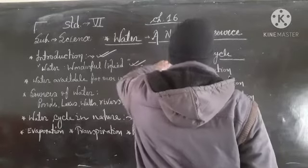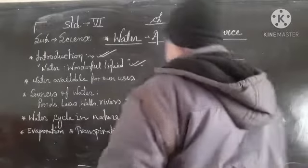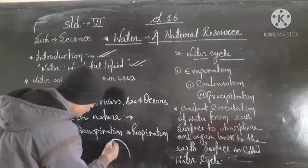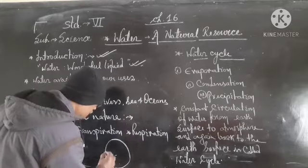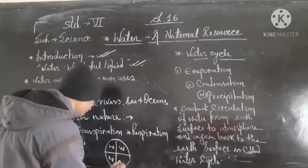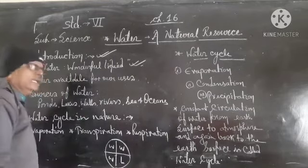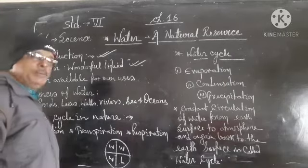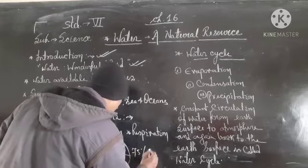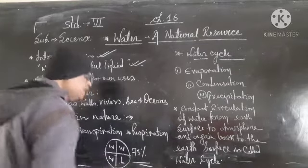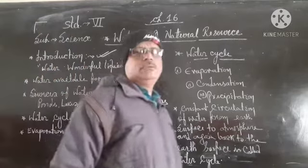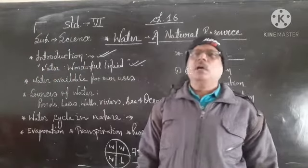The water present on the earth's surface — as you know, if we divide the whole earth into 4 parts, then 3 parts are covered with water and 1 part is land. So 75% of the earth's surface is covered with water. It is said that a huge amount of water is present on the earth's surface.